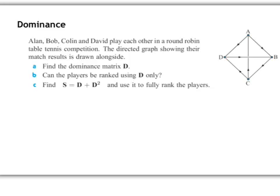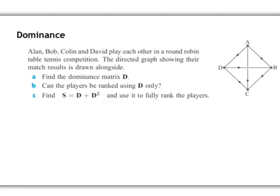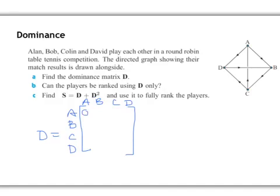So the dominance matrix D, again, is just our one-step matrix. So we start off here by firstly labeling our matrix, A, B, C, and D, and again, same across the top. And just going along and working out the one-step matrix. So from A, there is no loop to A, there is one connection to B, there is no connection to C, and one to D.